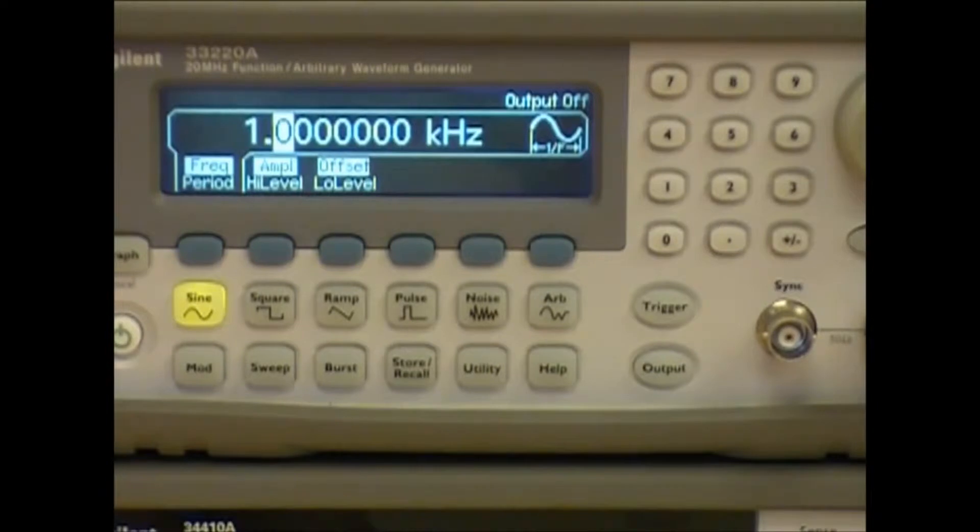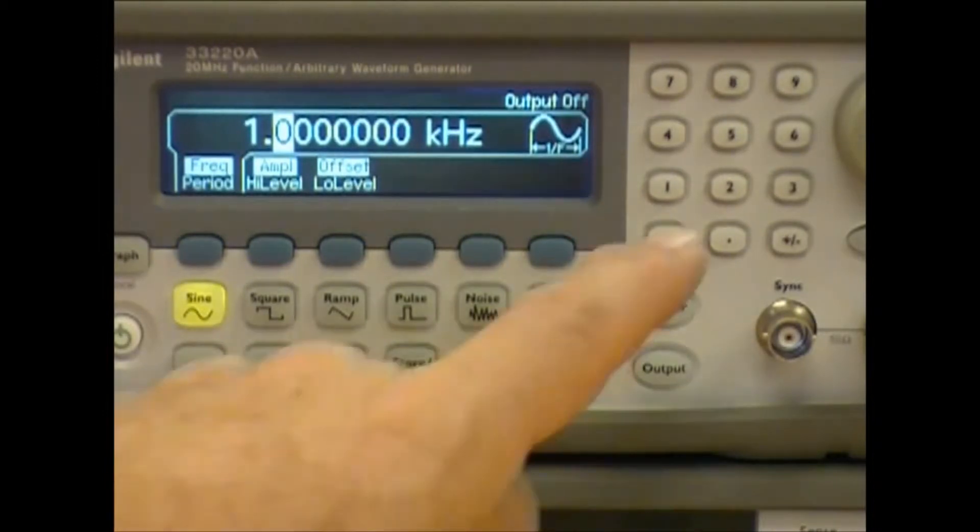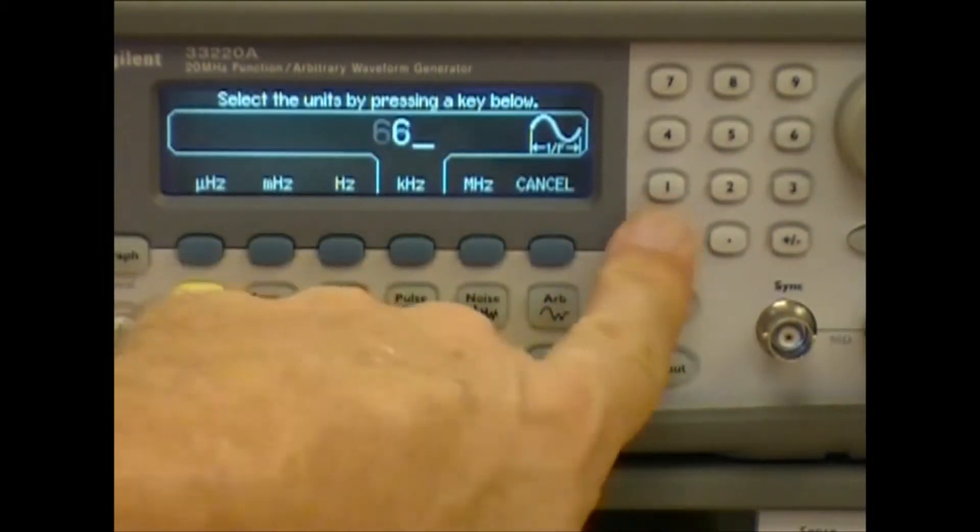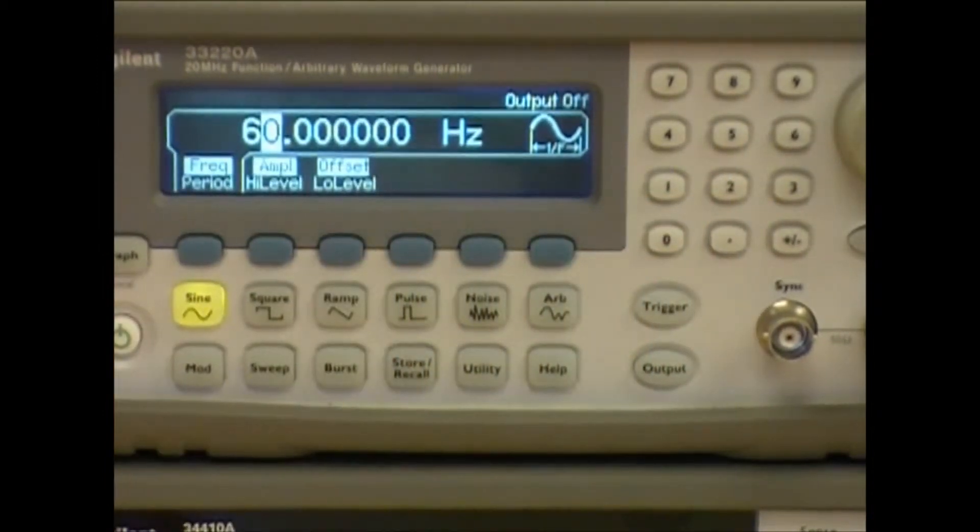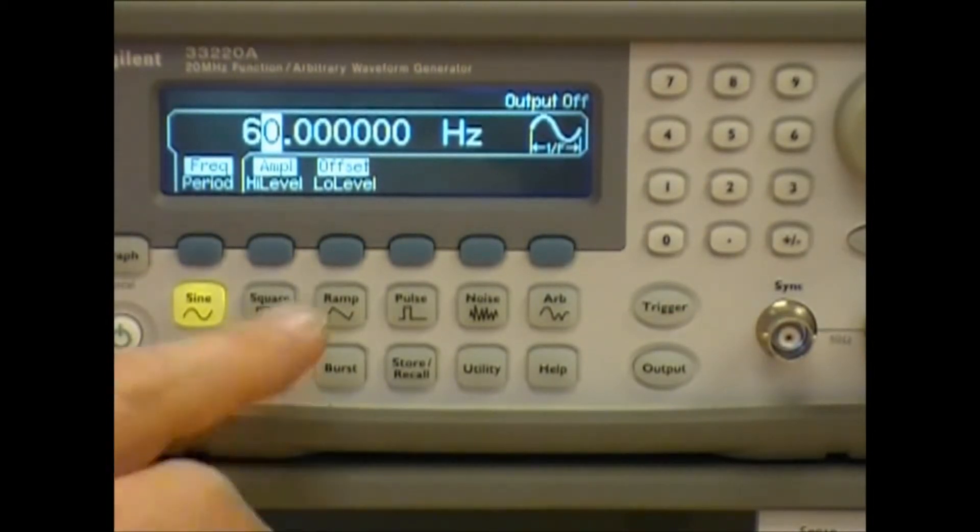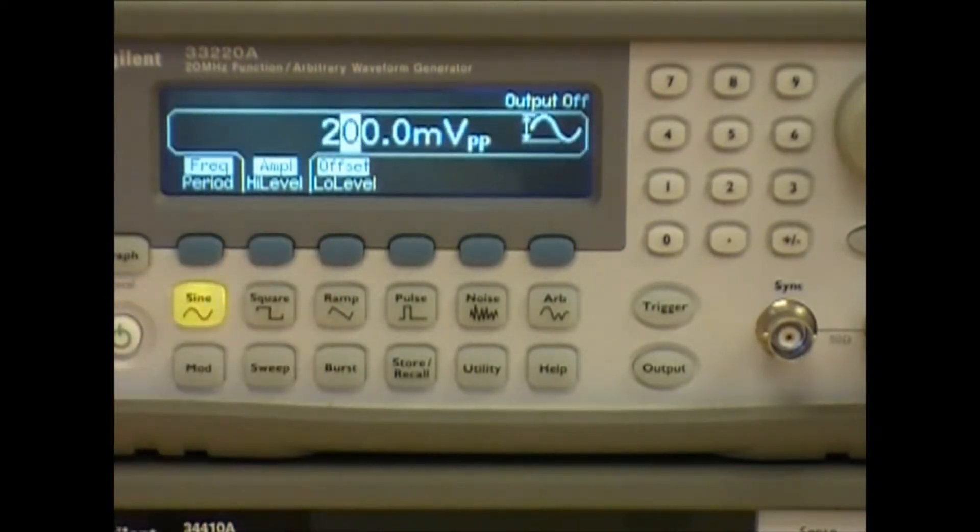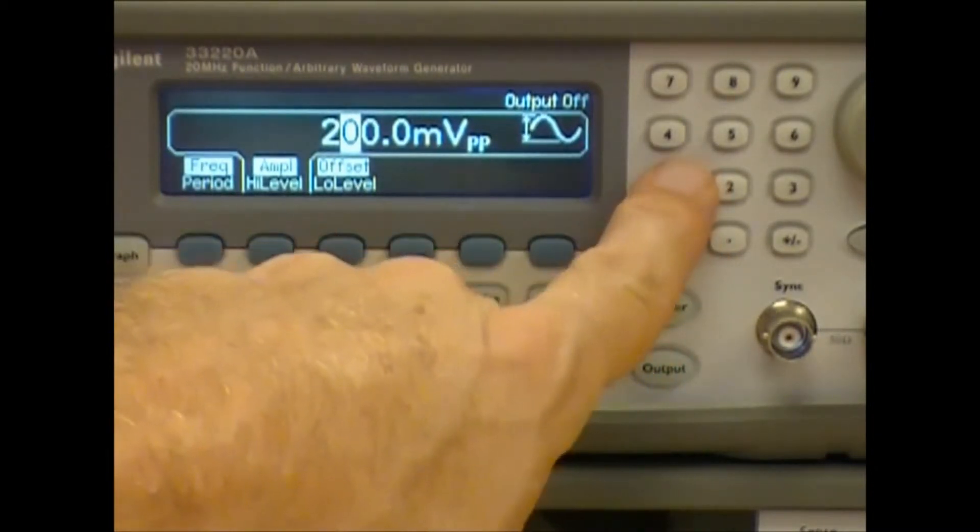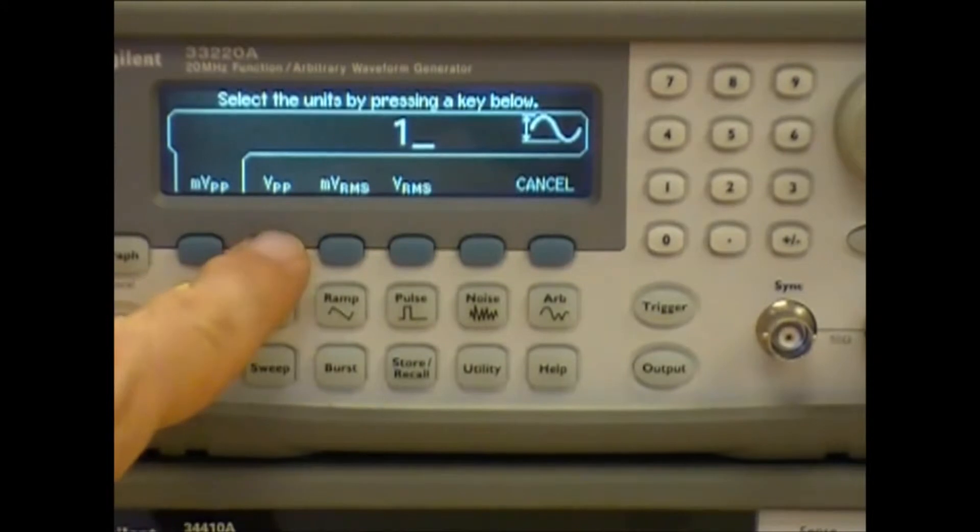We want a noise power frequency, and in the case of power line frequency in the U.S., that is 60 Hertz, so let's set that to 60 Hertz. Secondly, I want an amplitude to that AC signal, and for simplicity let's just set that to one volt peak to peak.